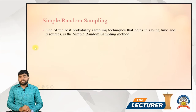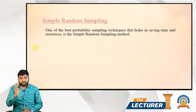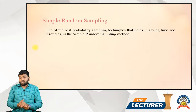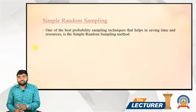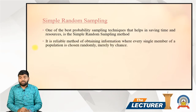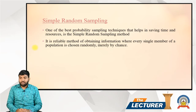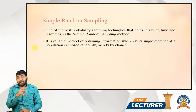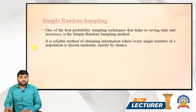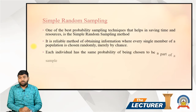Simple random sampling is one of the best probability sampling techniques that helps in saving time and resources. It is a reliable method of obtaining information where every single member of a population is chosen randomly, merely by chance. Each individual has the same probability of being chosen to be a part of the sample.